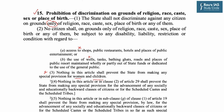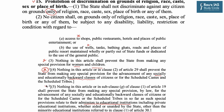The First Constitutional Amendment Act added Article 15(4), which says nothing in this article or in clause 2 of Article 29 shall prevent the state from making any special provision for the advancement of any socially and educationally backward classes of citizens or for Scheduled Castes and Scheduled Tribes. Article 15(5) was added through the 93rd Constitutional Amendment in 2006, enabling the government to make special provisions regarding admission to educational institutions including private educational institutions.